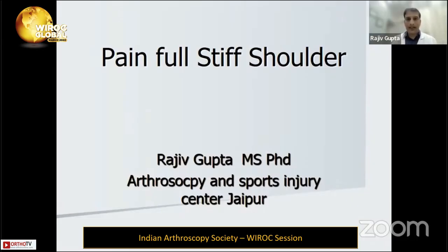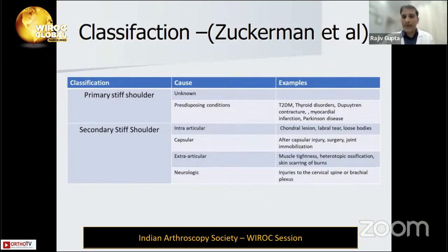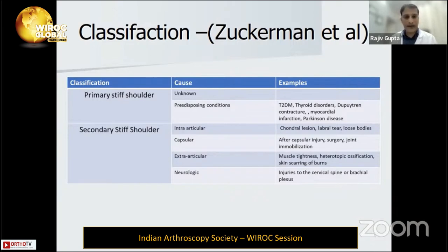My talk is on painful stiff classification. We have primary and secondary. In primary, most of the time the etiology is unknown. In secondary, predisposing causes include uncontrolled diabetes, hypothyroid conditions, and Dupuytren's contractures — all predisposing factors for the development of frozen shoulder and adhesive capsulitis.